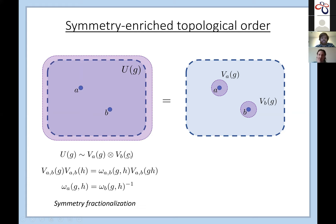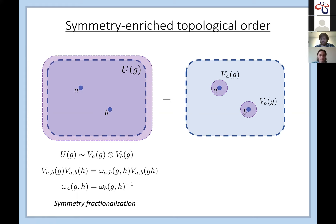While U_G is a linear representation, the local actions V near the anyons need only be representations up to a phase omega. As long as these phases cancel across all particles so the total representation is linear, this is allowed. When omega is non-trivial we call this symmetry fractionalization. A famous example is the fractional quantum Hall effect, where an electron splits into three quasiparticles each carrying one-third of the elementary charge — that's fractionalization.